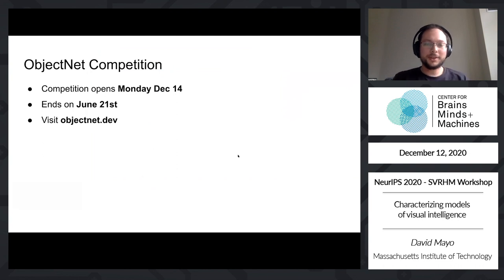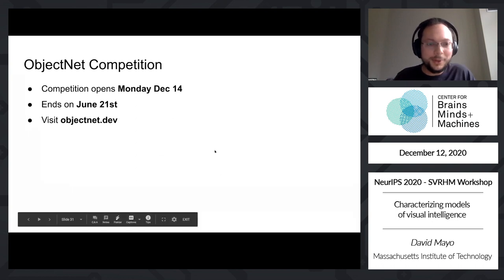So this competition opens up this coming Monday. It was announced recently on the IBM blog, and it will end during CVPR, June 21st. This gives teams about six months to work on this problem. If you're interested in participating, please check out objectnet.dev, and there'll be links to code repositories and eval.ai, where you can read docs and learn about bidding.